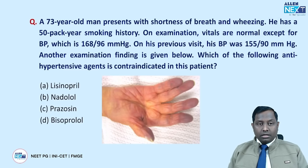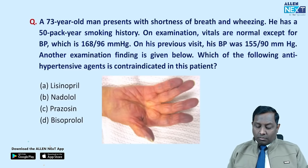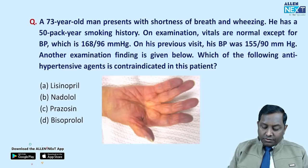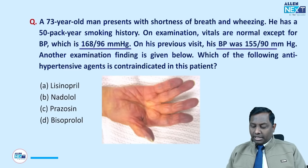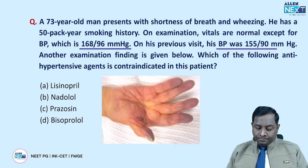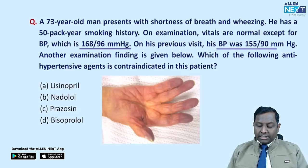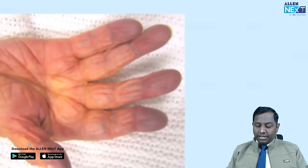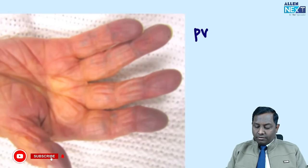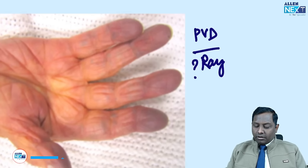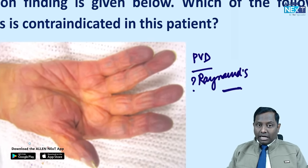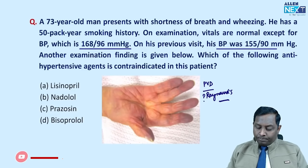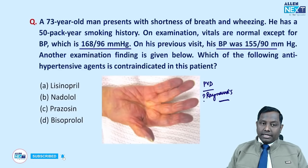A 73-year-old man with a 50 pack-year smoking history has blood pressure of 168. Examination findings suggest peripheral vascular disease, possibly Raynaud's phenomenon, where fingers turn dark or blackish. The question asks which antihypertensive agent is contraindicated in this condition.